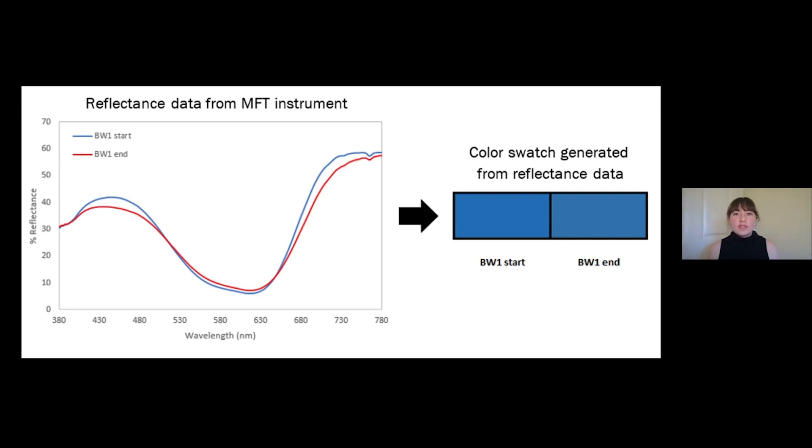This is an example of reflectance curves from the fade testing of a standard piece of highly sensitive blue wool with the digital color swatches that I created. These swatches show the color of the item, providing a visual representation of numeric color values. Here, they also serve as a visualization of the light fading of the item, as they represent the color of the testing spot at the start and end of fade testing.